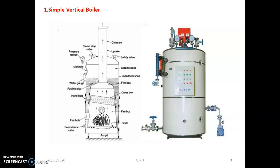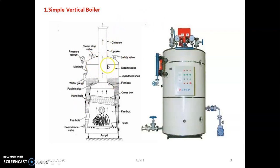The boiler also consists of a number of mountings including safety valves, steam stop valves, pressure gauges, and manholes. Each mounting has its own application. The manhole is necessary to clean the furnace area and assist with maintenance, as well as to clean the inner portion and the chimney. The pressure gauge is required to know the steam pressure, the safety valve is important per IVR safety norms, and the steam stop valve is necessary for emergency purposes.